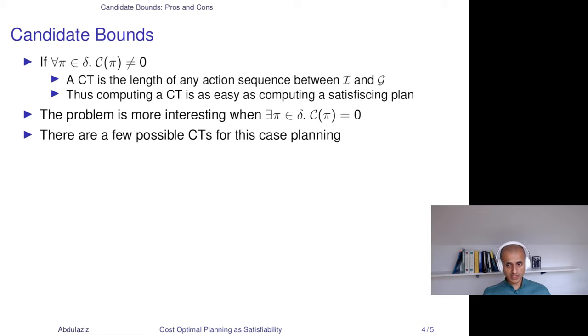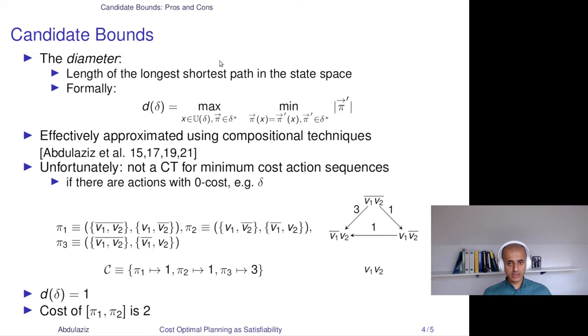I'll primarily focus on topological properties of the state space, but I'll also consider some other properties of that given transition system. The first such property is the diameter, and it is the most intuitive topological property. It also is a completeness threshold for satisfying planning as well as bounded model checking of safety properties. It can also be relatively effectively approximated using compositional techniques, on which I've worked for a number of years now. The definition of the diameter is that it is the length of the longest shortest path in the state space of the given factored transition system.